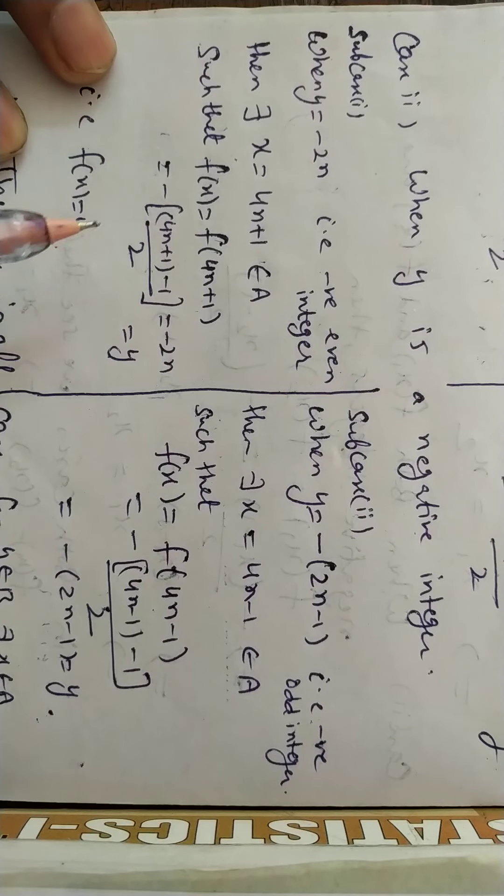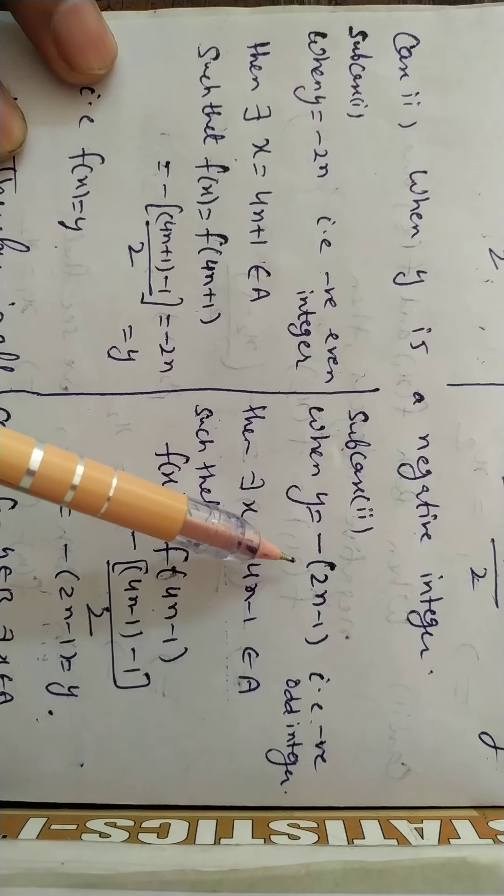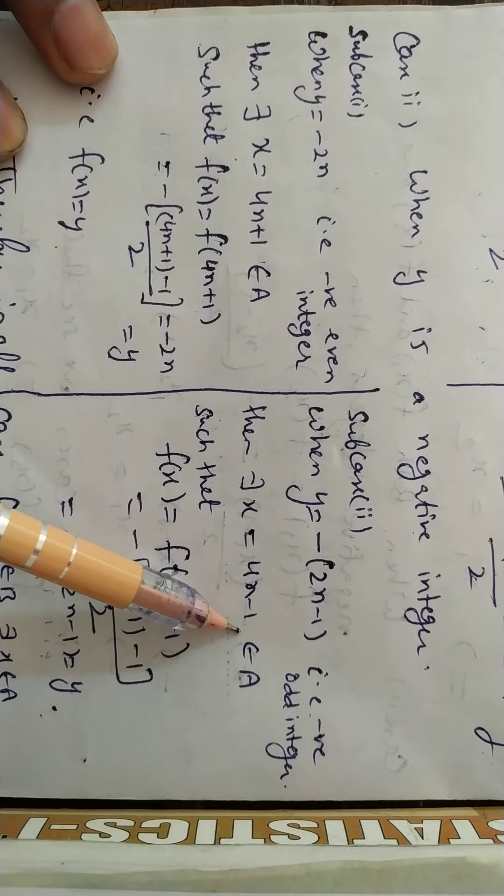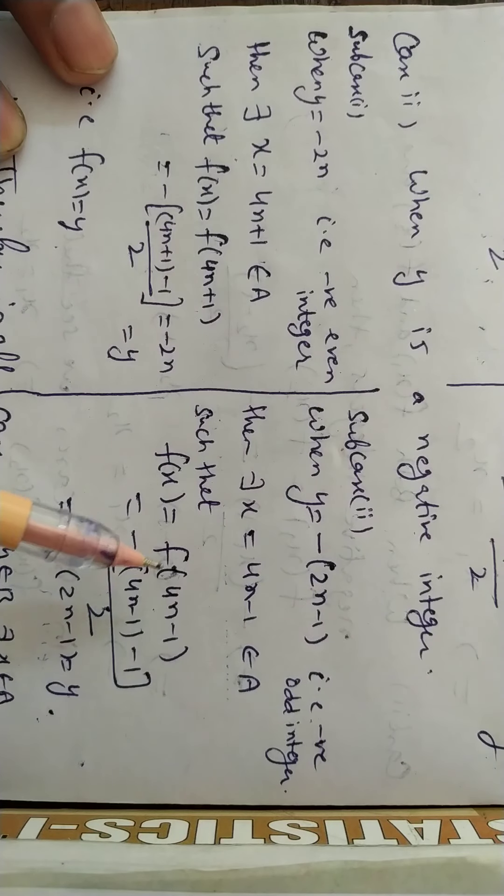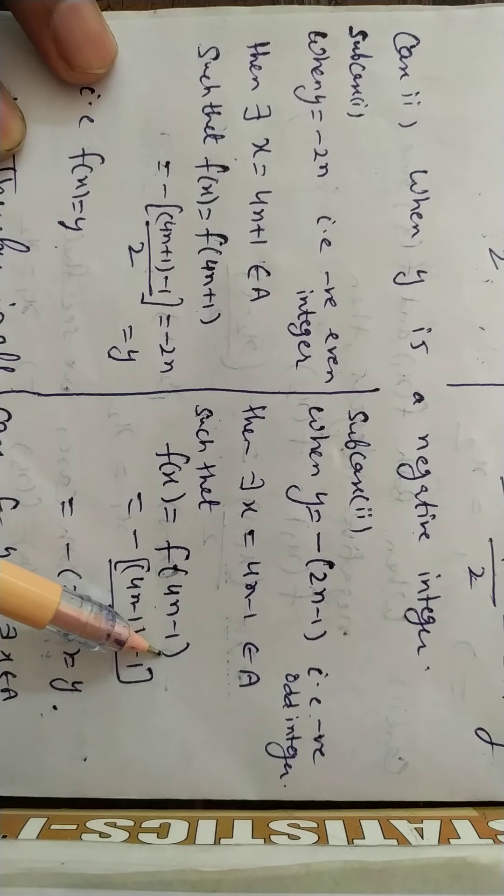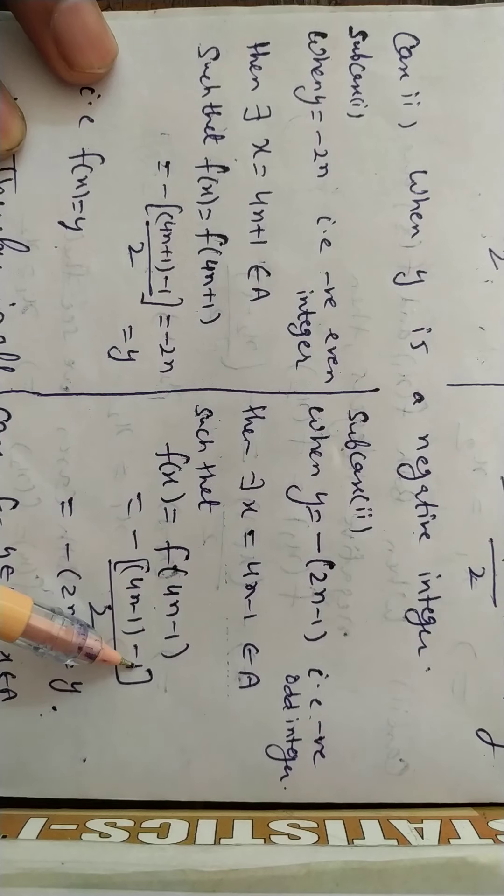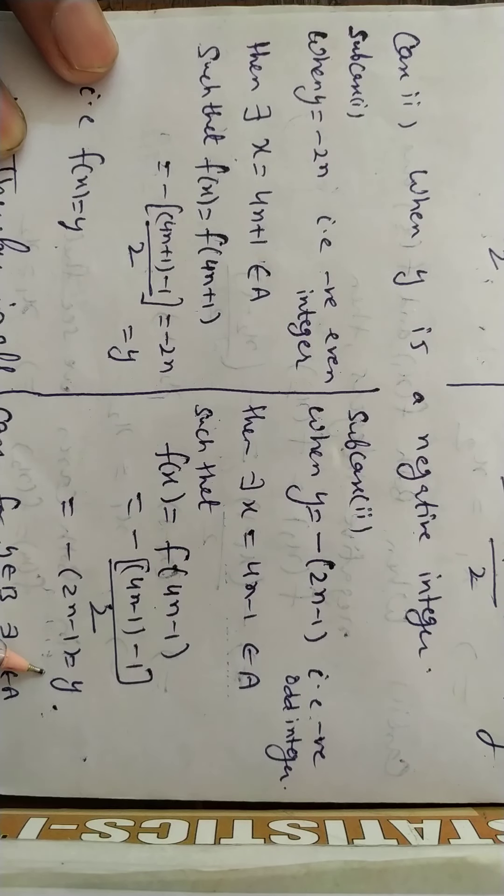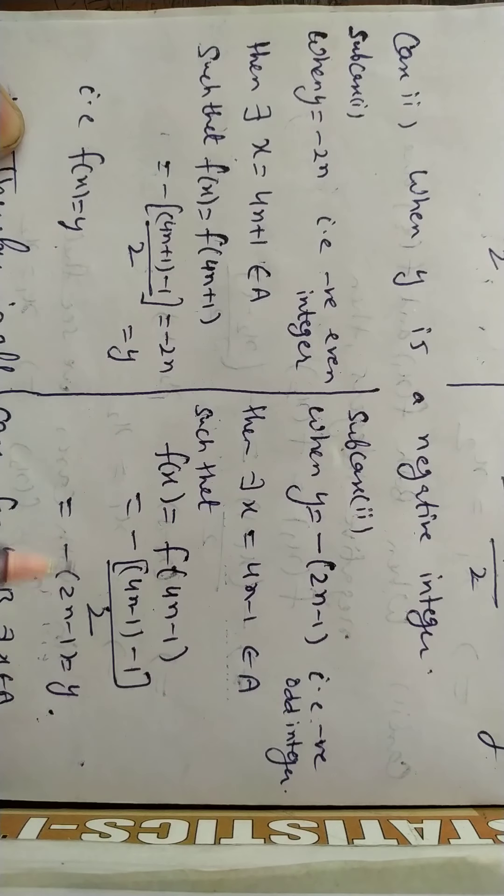If we take odd negative integers, then we do it this way: double it and subtract 1. Put it in the function: 4n-1, -(x-1), minus minus becomes plus, giving -2n-2. Taking 2 common, it cancels, giving y. So in both cases, f(x) = y.